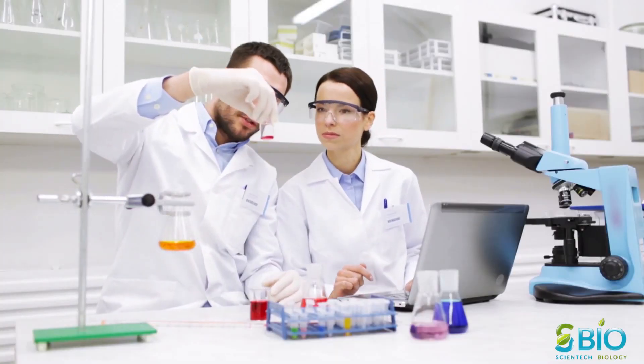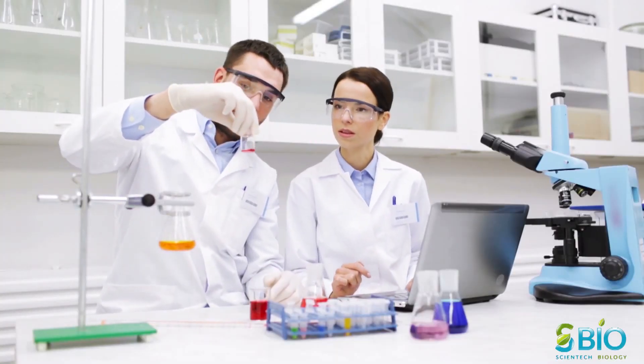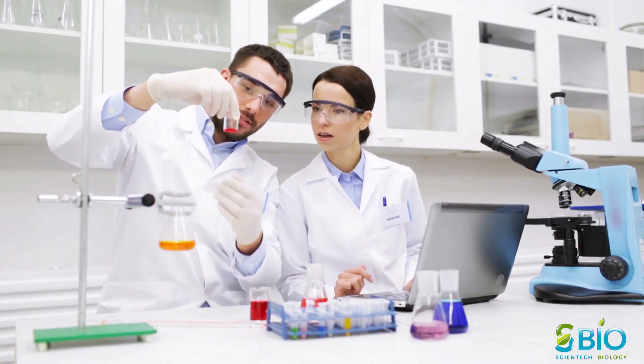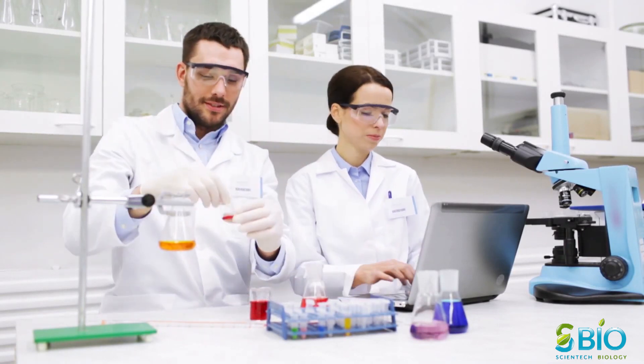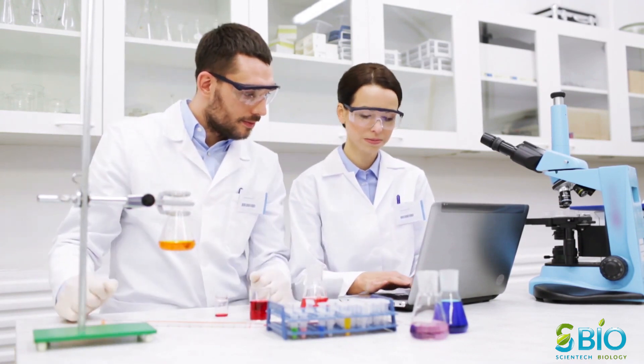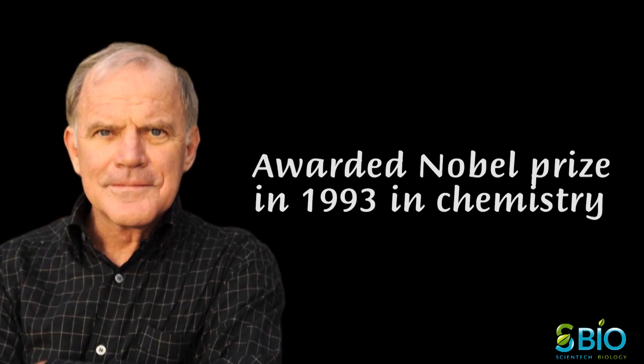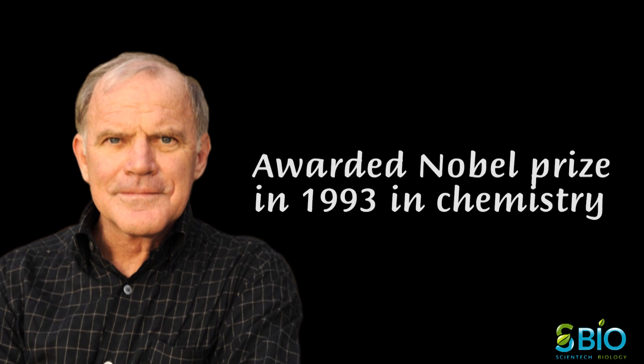PCR is a technique used in the lab to make millions of copies of a particular section of DNA. It was first developed in the 1980s. The polymerase chain reaction was originally developed in 1983 by the American biochemist Carey Mullis. He was awarded the Nobel Prize in Chemistry in 1993 for his pioneering work.